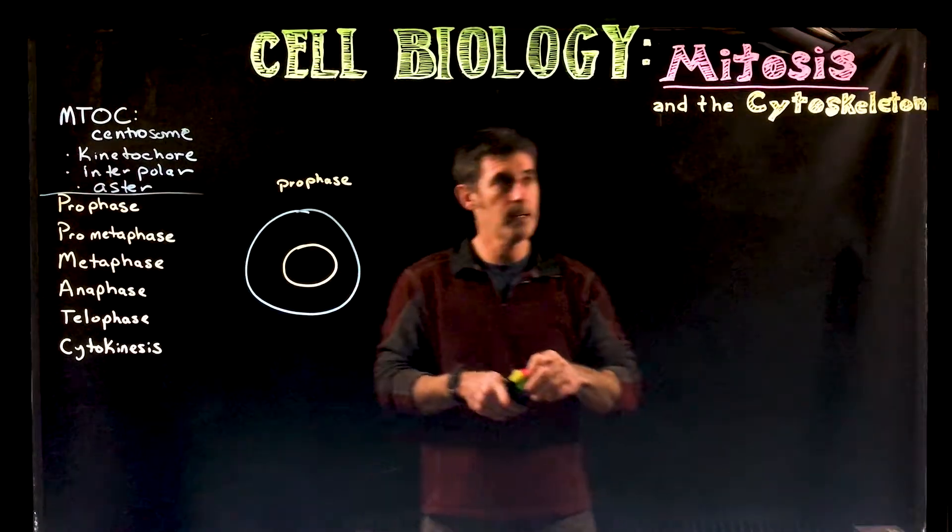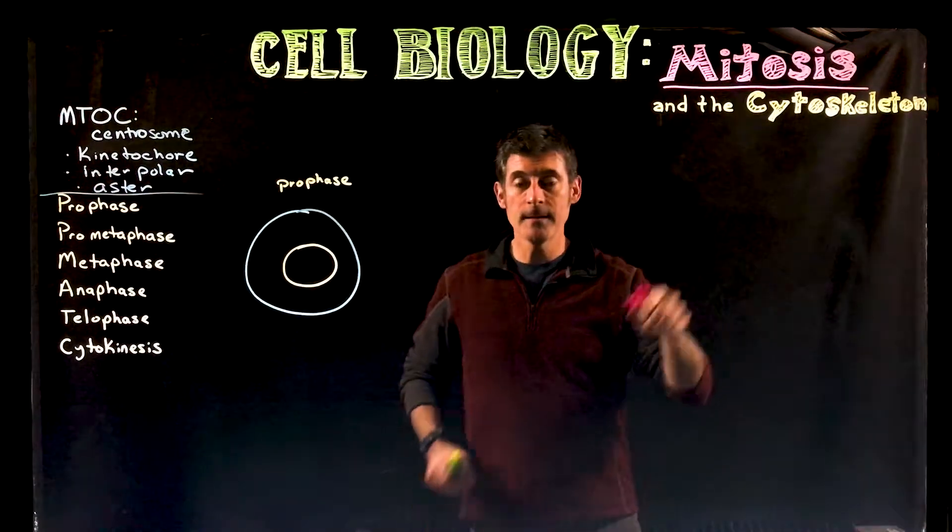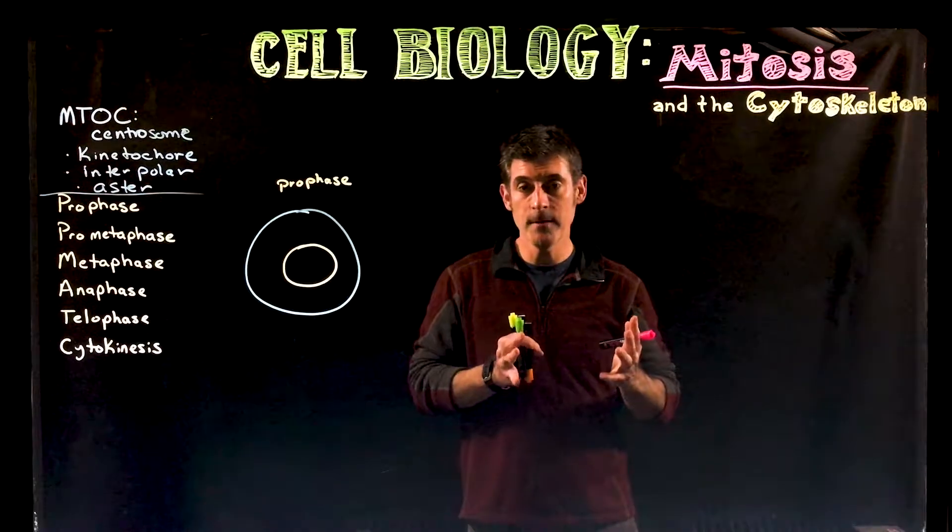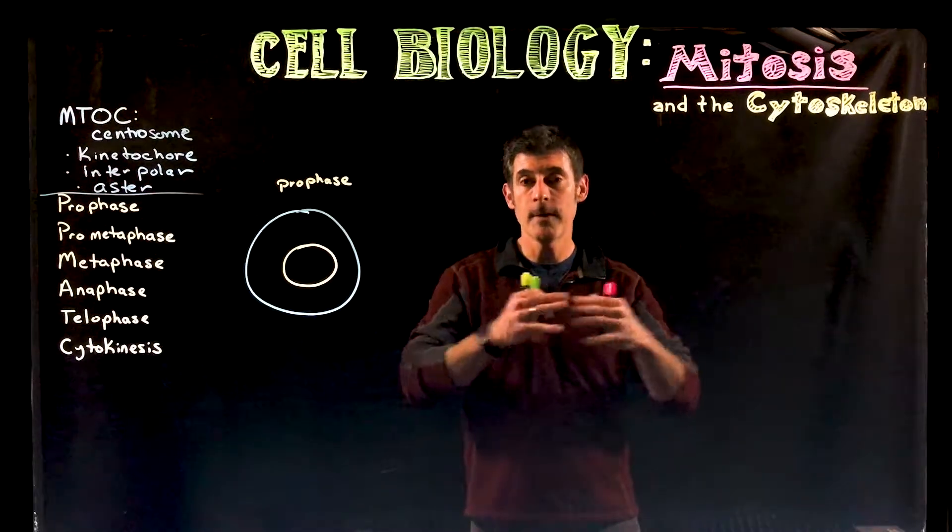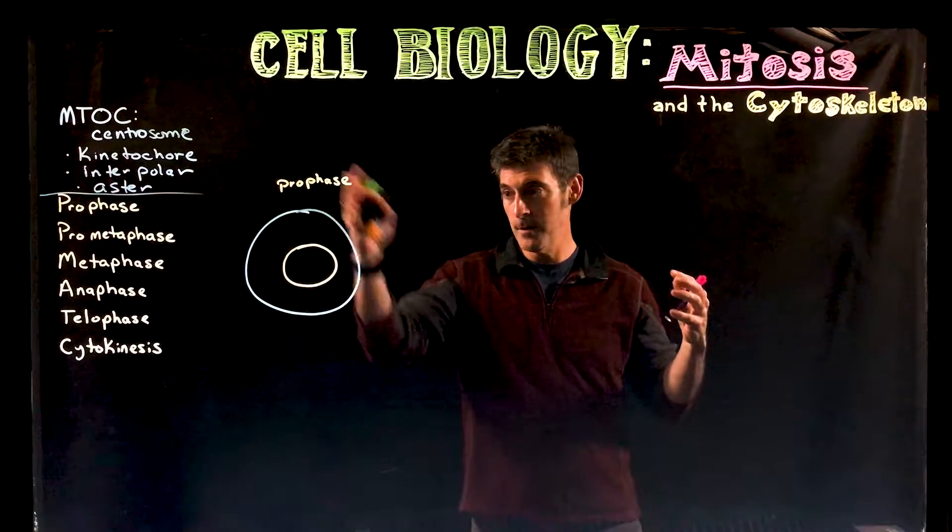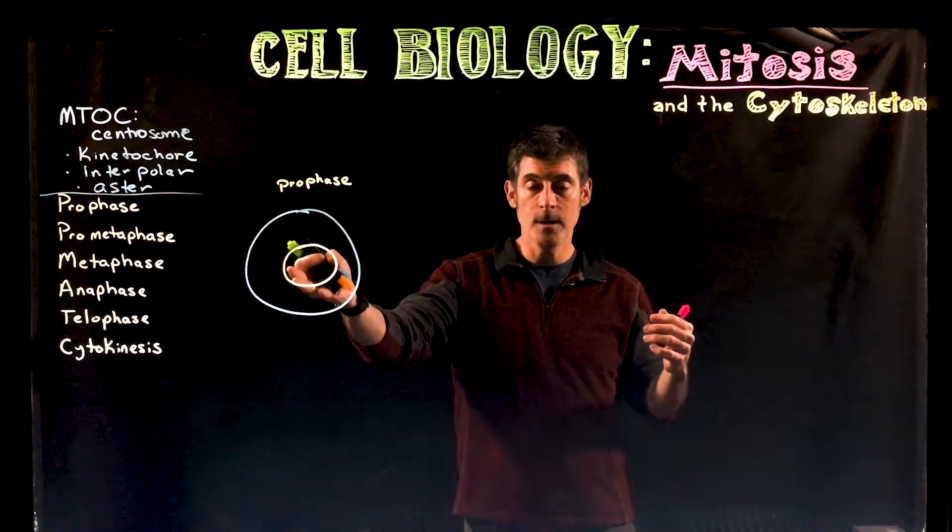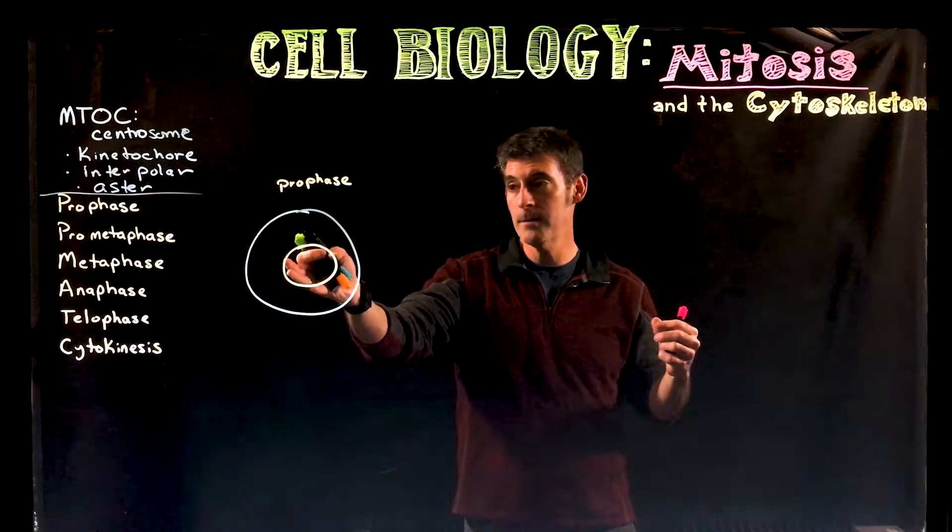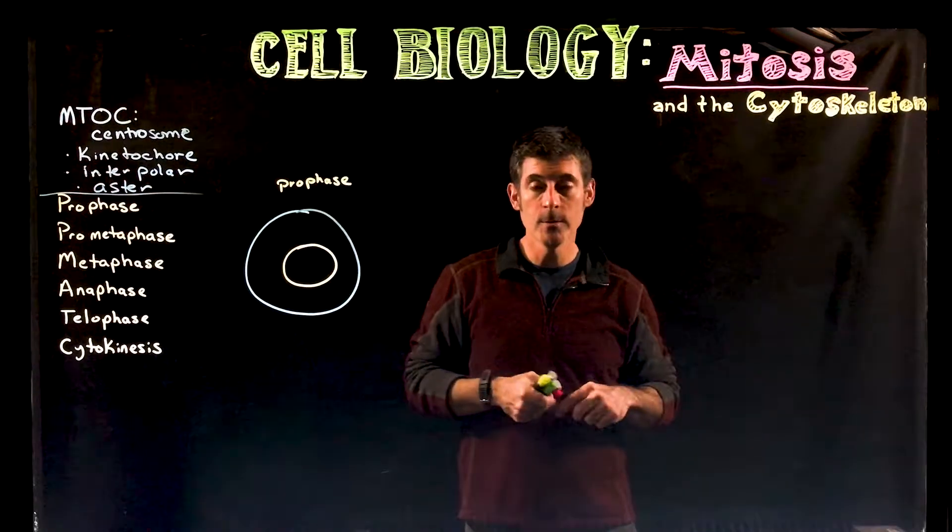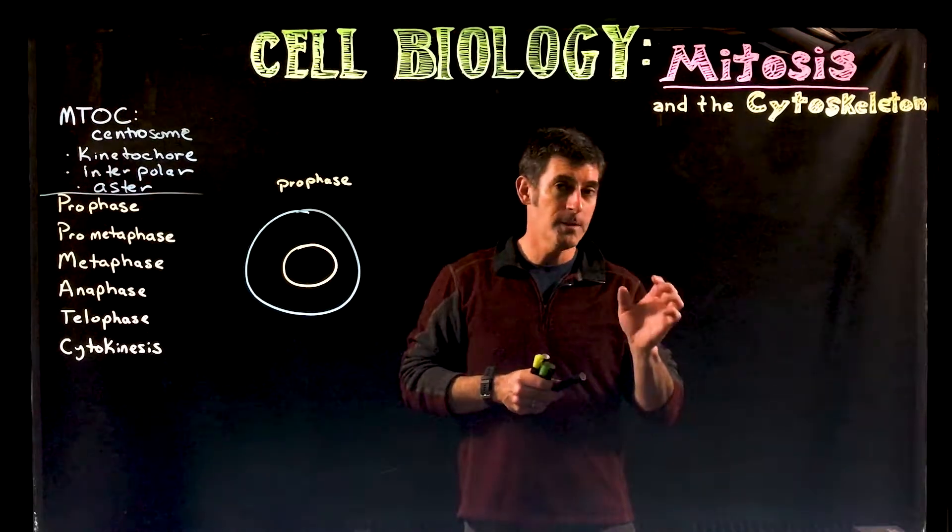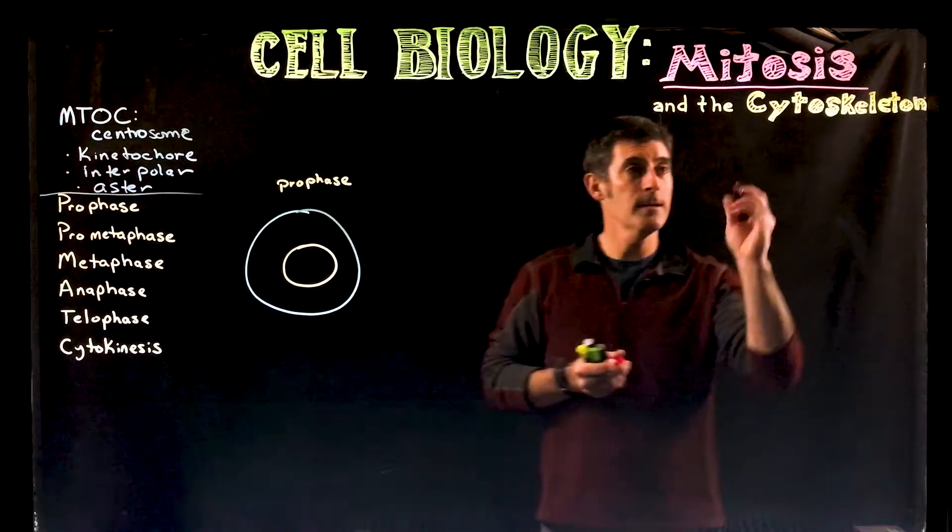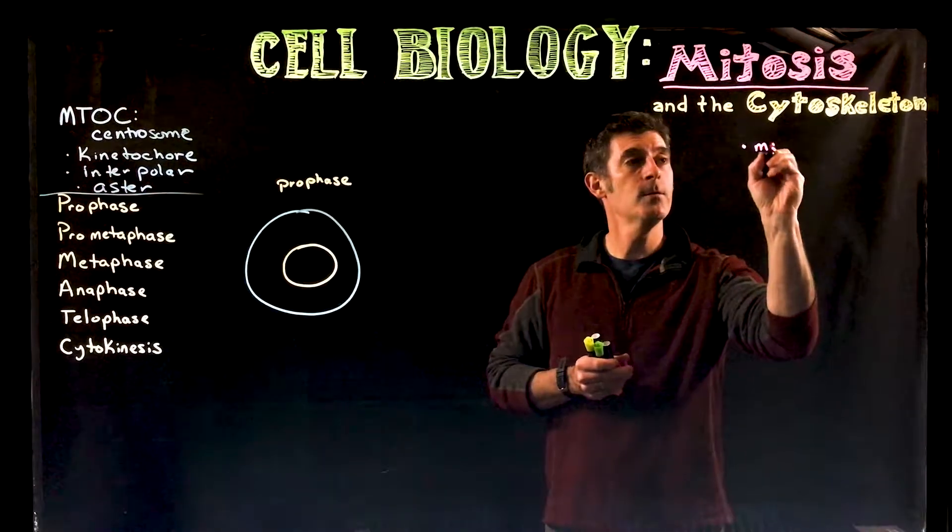So before we get into it, just to put out a couple terms here, the cytoskeleton is made up of a number of different types of proteins that are built into these structures that line the inside of the cell. Some of them are connected to the inner cell membrane, they're called the nuclear lamina proteins. And then there are microtubules and microfilaments. We are specifically going to be looking at a part of the cytoskeleton called the microtubules.